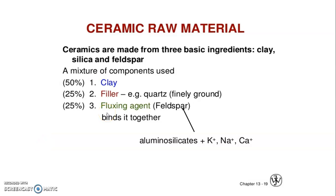In this slide, we are going to show you ceramic chromatidies. Ceramic chromatidies are made from three basic materials: clay, silica, and feldspar.